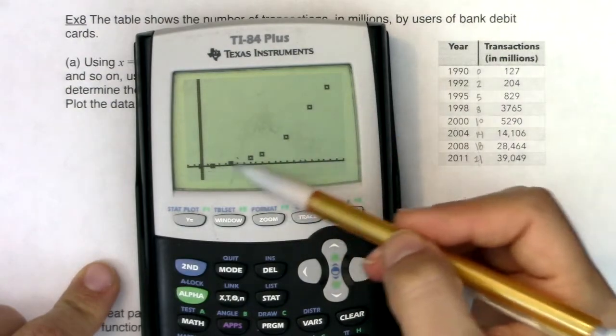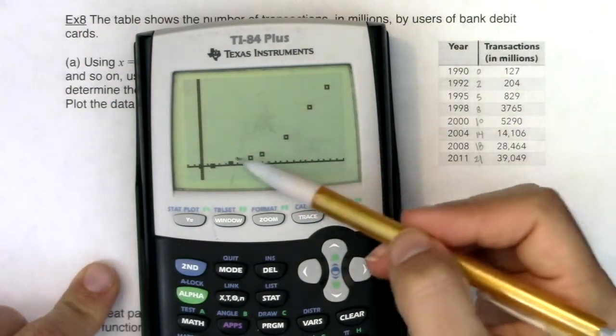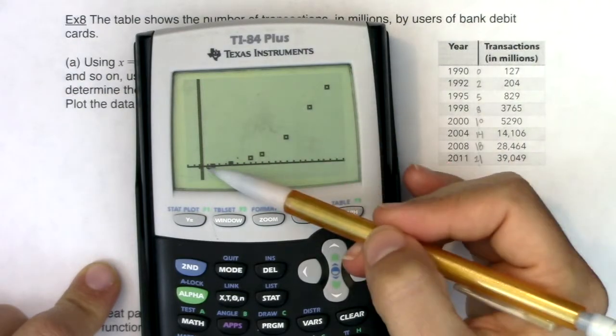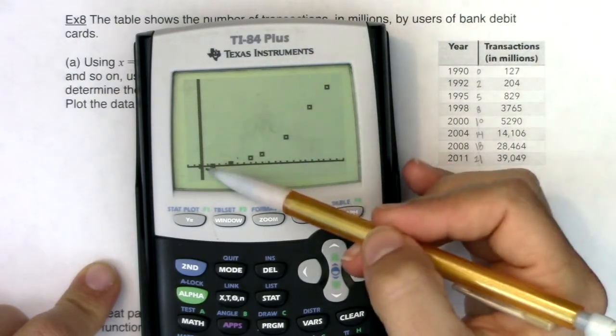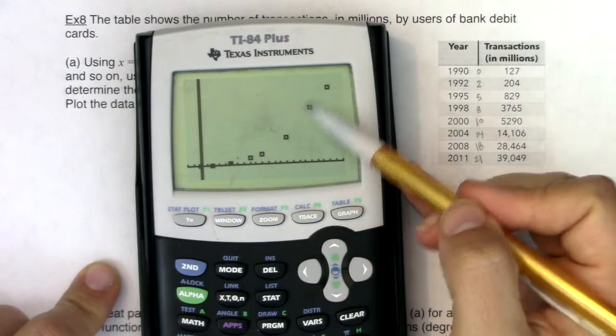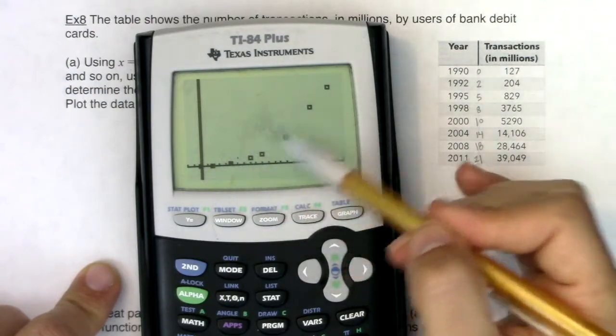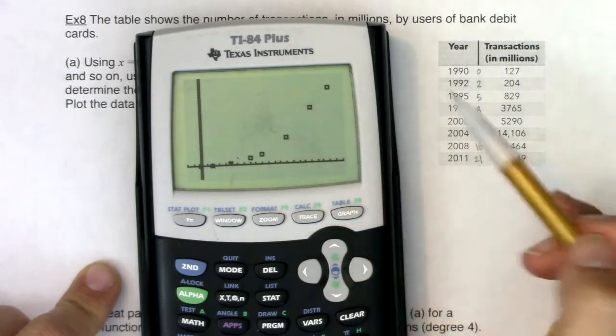Let me clear that out and hit zoom nine. That does look like it could be the right half of a parabola. It also could be exponential, cubic, or quartic. But I do see the parabola, the curve in the graph.